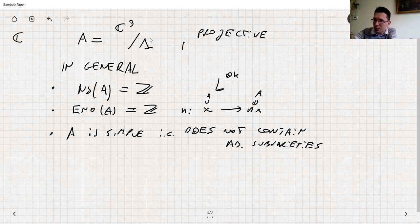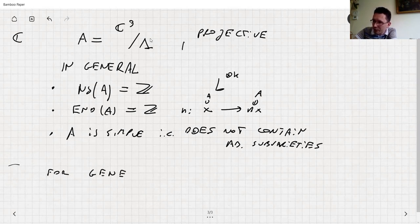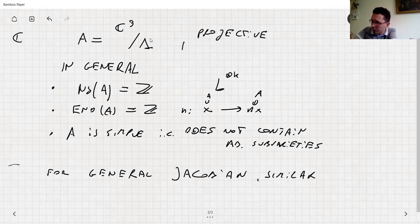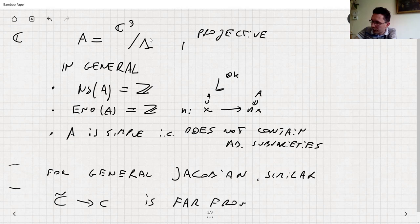Similar properties hold for Jacobians. The dimension of A_g is g(g+1)/2, so it grows quite quickly. For the general Jacobian: the Jacobian of a general curve is also simple, has no extra endomorphisms, and the Néron–Severi group is also ℤ. But if you have a covering, the curve is far from being general.